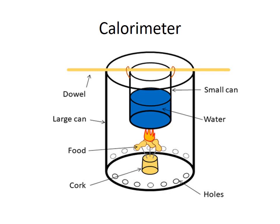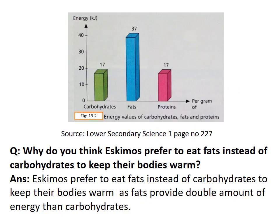This is a diagram of a calorimeter in which we burn food to get the amount of energy. According to a graph in Lower Secondary Science 1, burning one gram of carbohydrates provides 17 kilojoules of energy. Burning one gram of fats provides 37 kilojoules of energy, which is almost double that of carbohydrates. Burning one gram of protein also gives 17 kilojoules of energy.